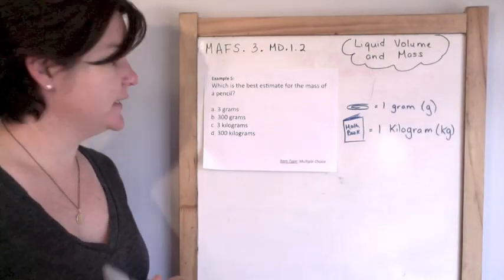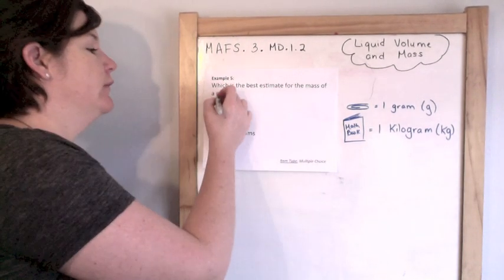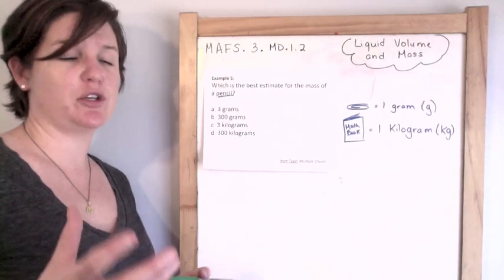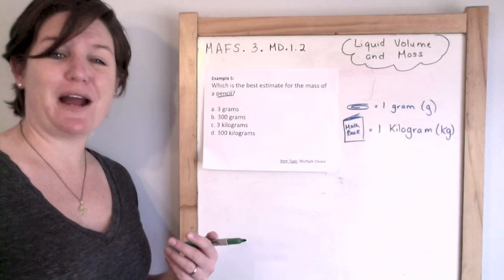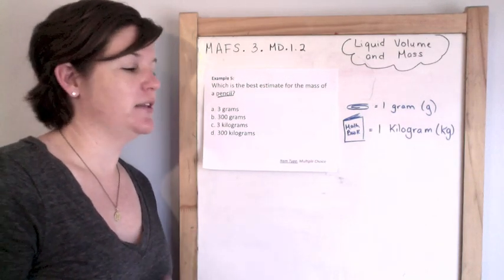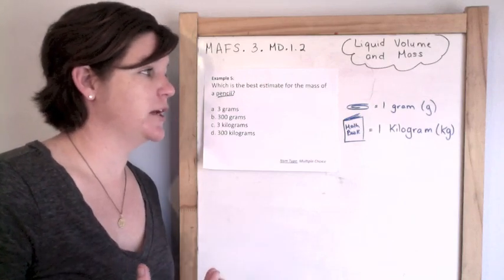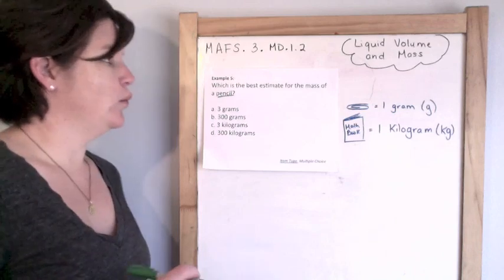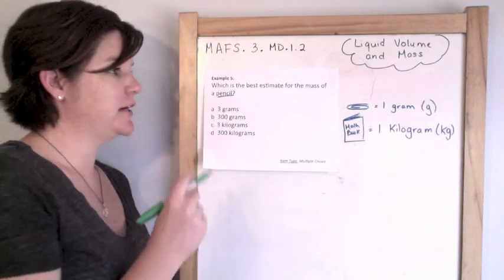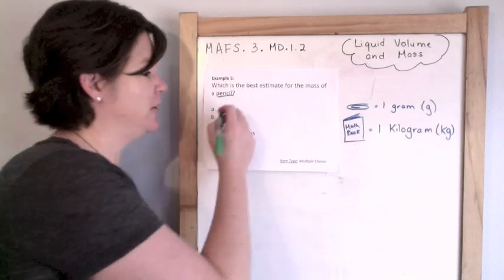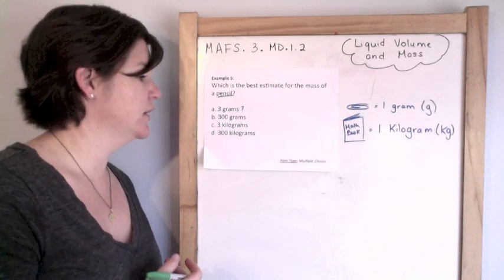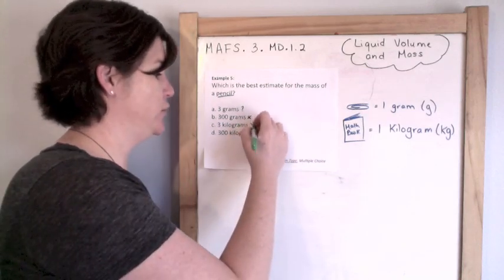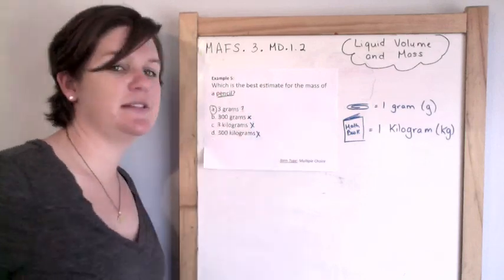Example 5: What is the best estimate for the mass of a pencil? A quick note: 1 gram is about the equivalent of a paper clip, so grams are used to measure lighter objects. 1 kilogram would be the size of like a math, science, or reading textbook — used to measure heavier objects. Also important: 1,000 grams equals 1 kilogram. So what's the best estimate for a pencil? 3 grams — that would be like 3 paper clips. Sounds about right. 300 grams is too heavy, 3 kilograms would be like 3 textbooks — no way. 300 kilograms is way too heavy. So our best estimate is 3 grams.